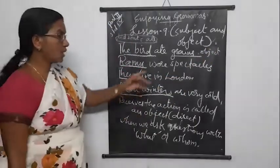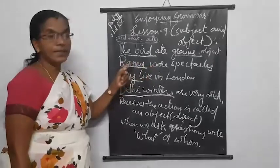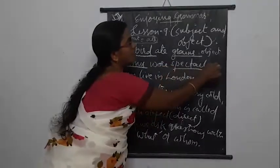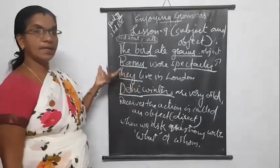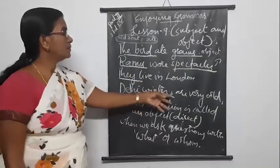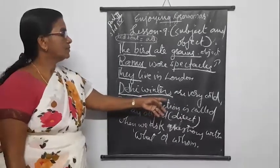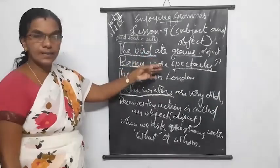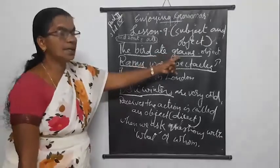Now we have to show them. Ramu wore spectacles. What did Ramu wear? Spectacles. So spectacles is the object. They live in London. What did they live? How did they live? We didn't get the answer, so there is no object. When we ask a question with what or whom, we will get the answer — that is the direct object, the receiver of the action.